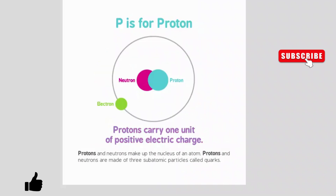P is for proton. Protons carry one unit of positive electric charge. Protons and neutrons make up the nucleus of an atom. Protons and neutrons are made of three subatomic particles called quarks.